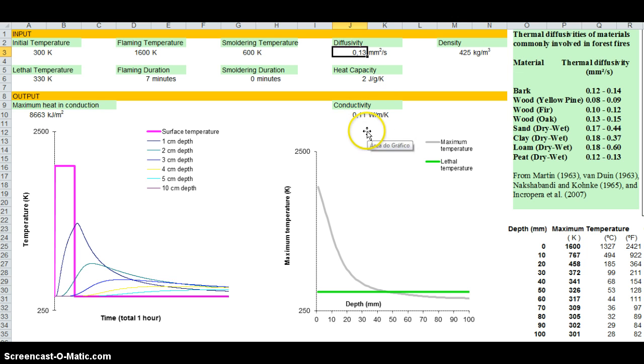And if you change these values, you have a different conductivity, which is a different way to express some thermal properties of wood or any material.